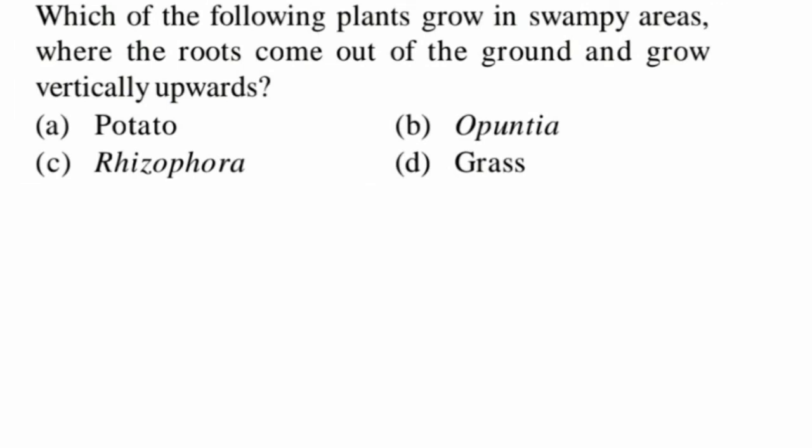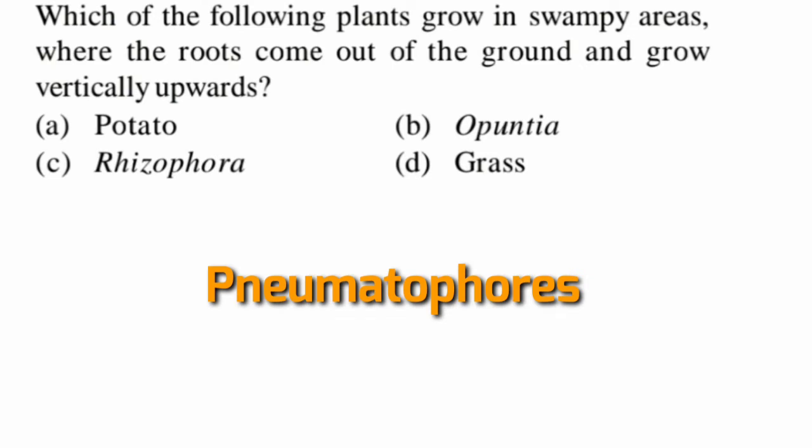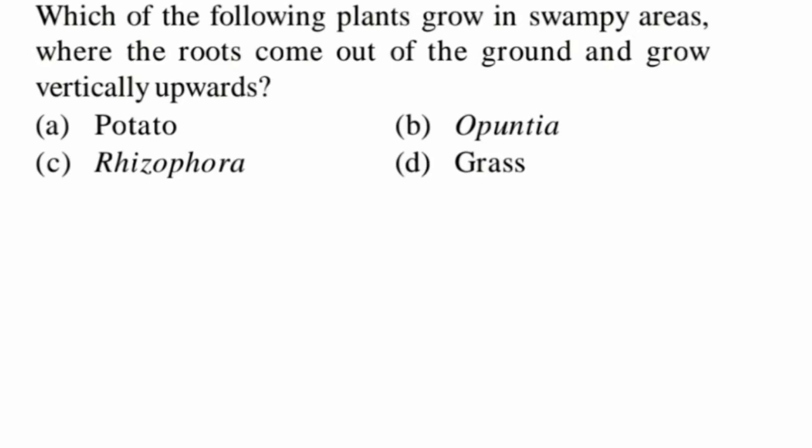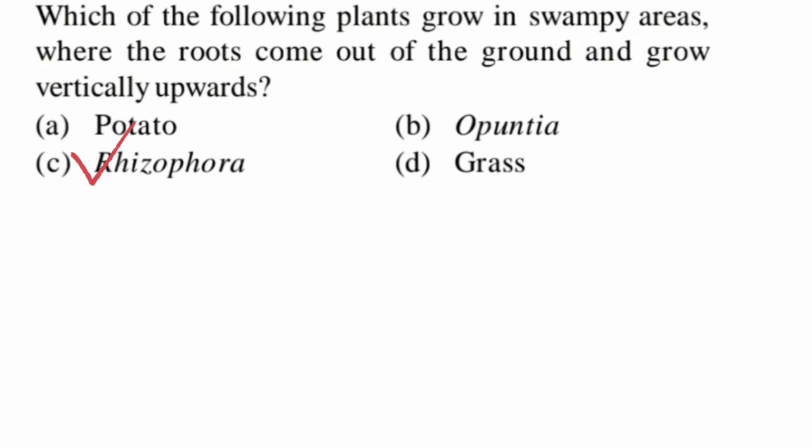Fourth question: which of the following plants grow in swampy areas where roots come out of the ground and grow vertically upwards? This is seen in pneumatophores. Rhizophora is a very good example — it is a type of mangrove plant that exhibits pneumatophores, a type of root which grows vertically upward just above the substratum. They are negatively geotropic. So option C is correct.